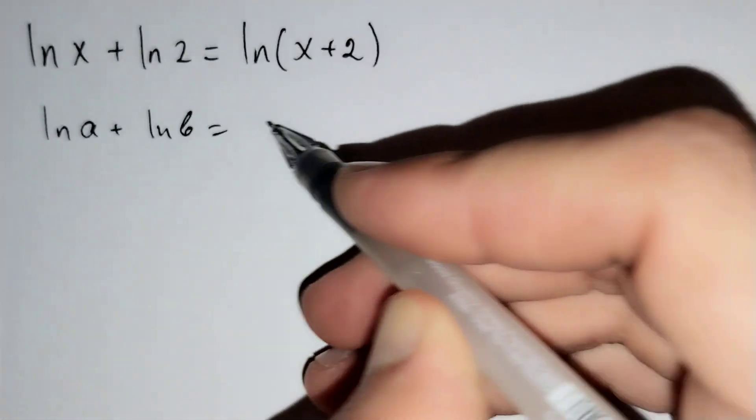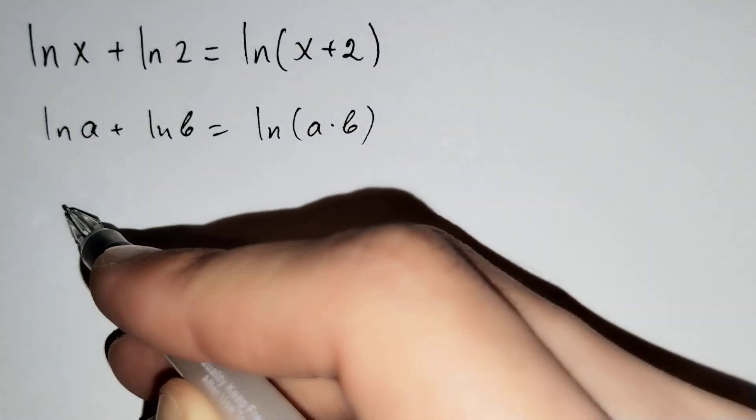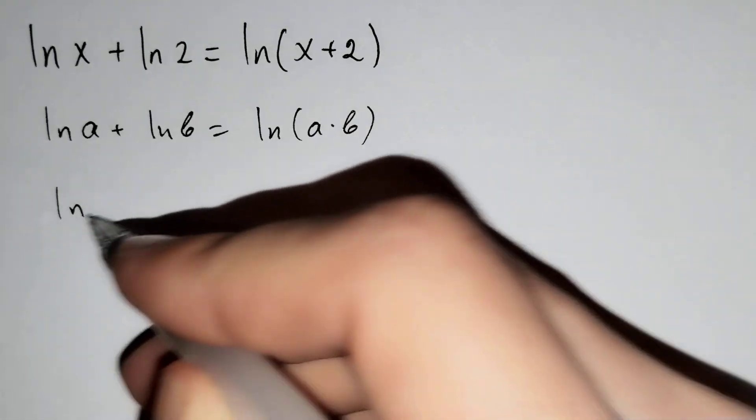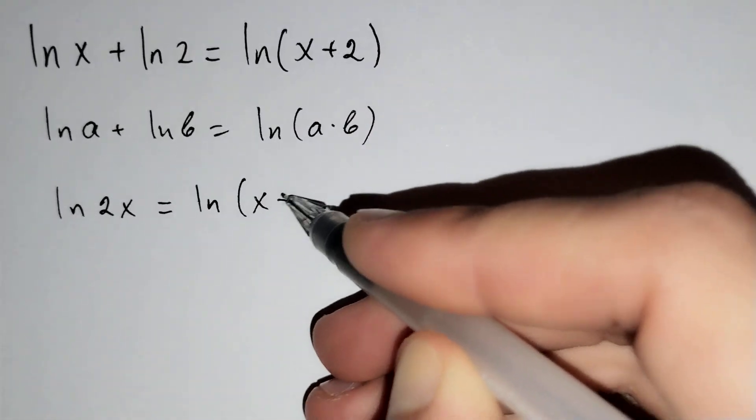First, we should know this formula: ln a plus ln b equals ln of a times b. For this formula, this is equal to ln of x times 2, which is ln 2x. So ln 2x equals ln of x plus 2.